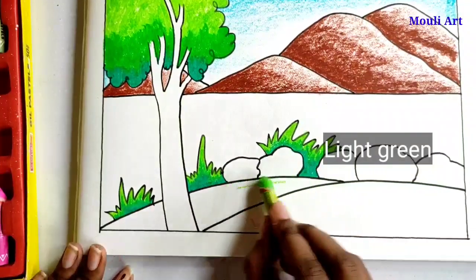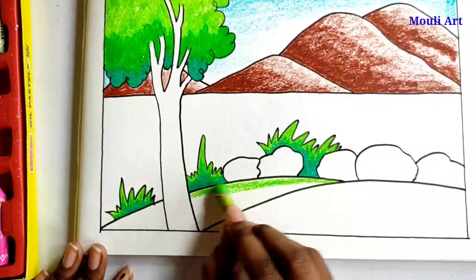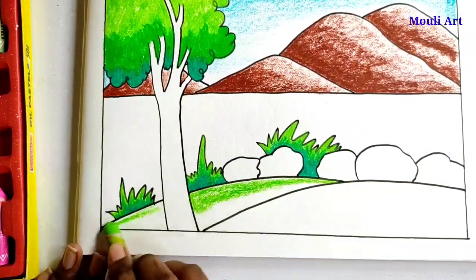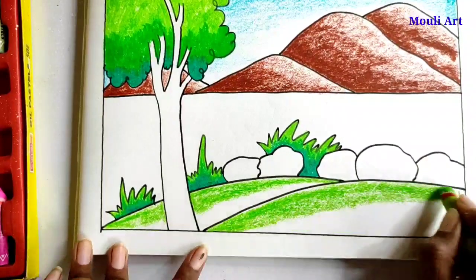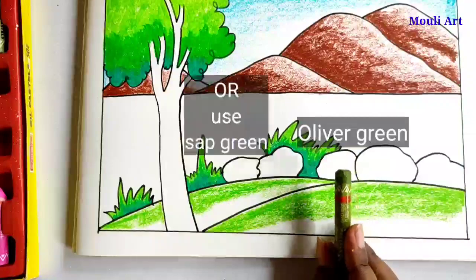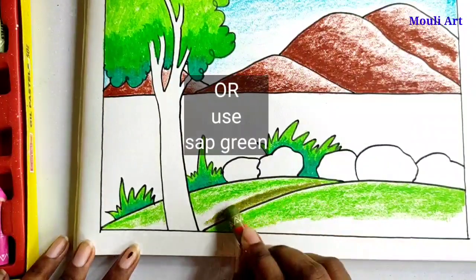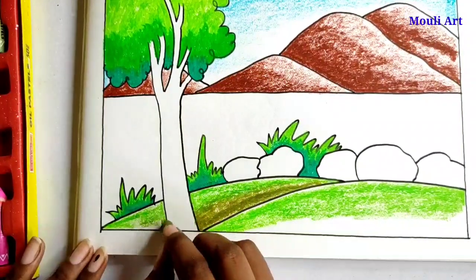Then color the ground or field. I will color the top of the field with light green color and bottom part will be colored with olive green color. If you don't have olive green color, use sap green.